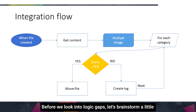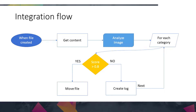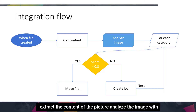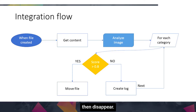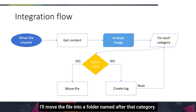Before we look into Logic Apps, let's brainstorm a little bit about how this integration flow looks. The idea is: when I upload a file into OneDrive, it will be in a common folder where we dump all our pictures. I extract the content of the picture, analyze the image with the Computer Vision API, and this API produces a list of tags or categories. Then I set a condition — if the score is higher than 80% (0.8), I move the file into a folder named after that category. Otherwise, I create a log and move on to the next one.